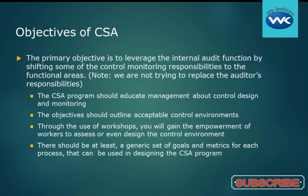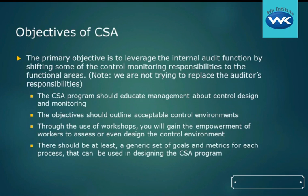The goal of CSA should be to educate management about control design and monitoring. The objectives should outline the acceptable control environments. Through the use of workshops, you'll gain the empowerment of workers to assess or even design the control environment — giving them the feeling of ownership, if not the actual ownership, of making sure the process and the control are working the way they're supposed to. There should be at least a generic set of goals and metrics for each process that can be used in designing the CSA program, providing the ability to properly assess the control.